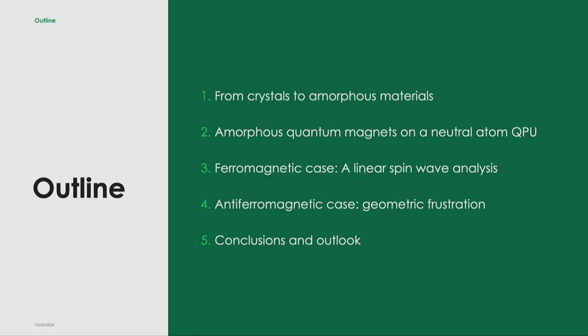To outline the talk: I will first discuss what amorphous materials are, starting from crystals and discussing the difference between these materials and crystalline or quasi-crystalline structures. Then I will discuss how we can engineer amorphous quantum magnets compatible with our quantum processing units, which have van der Waals interactions decaying as one over R⁶. After that I'll discuss the ferromagnetic case using linear spin wave theory, then the antiferromagnetic case with geometric frustration, and finally the conclusion and outlook.